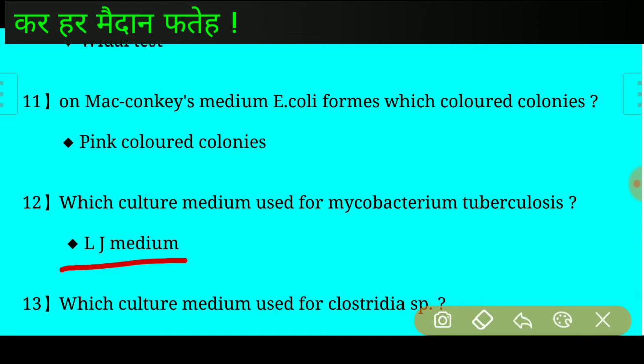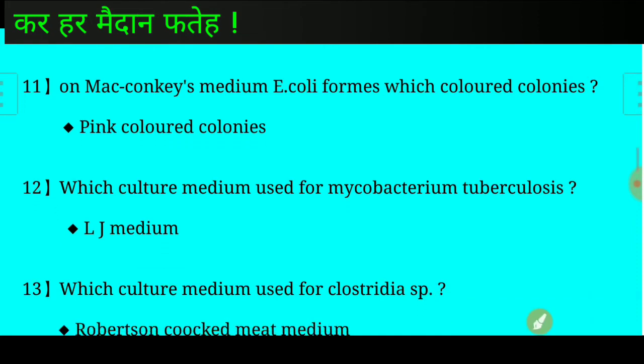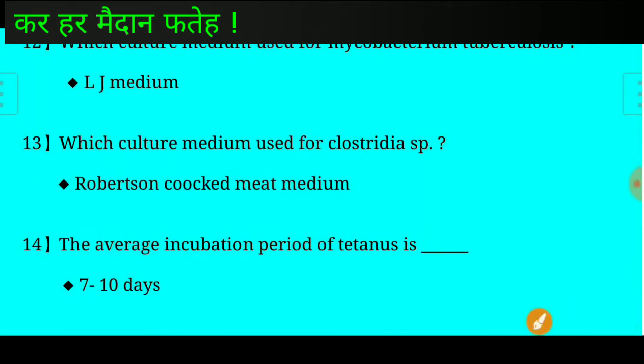Question number thirteen: Which culture medium is used for Clostridium species? Answer: Robertson cooked meat medium is used for Clostridium species.